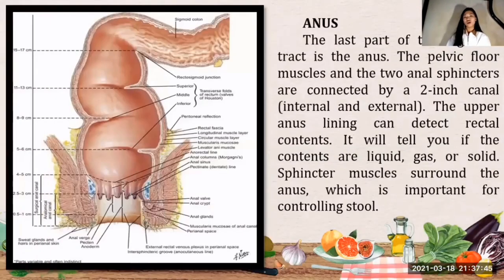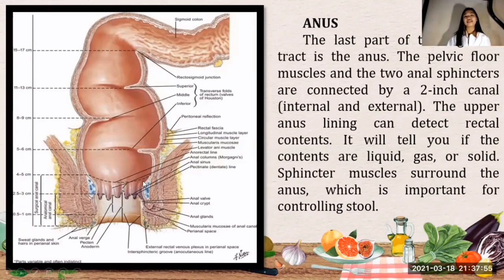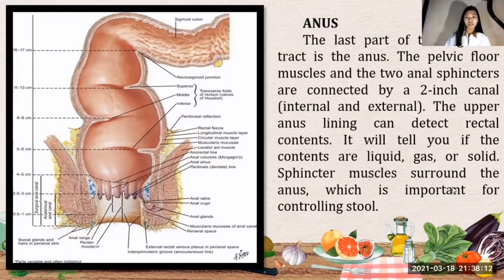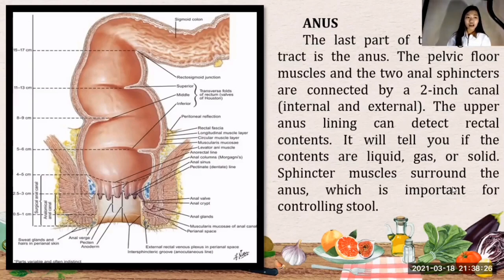The last part of the digestive tract is the anus. The pelvic floor muscles and the two anal sphincters — internal and external — are connected by a 2-inch canal. The upper anus lining can detect rectal contents and tell you if they are liquid, gas, or solid. The sphincter muscles surround the anus, which is important for controlling stool. When the rectum is full, your body feels the urge to have a bowel movement. The internal anal sphincter relaxes and pushes stool from the rectum into the anal canal.